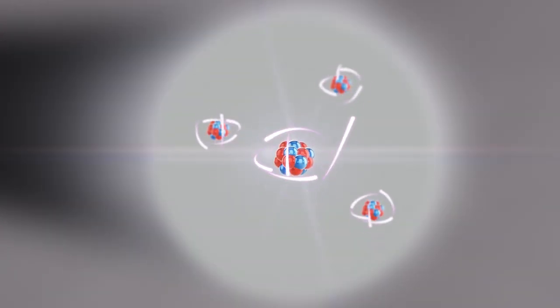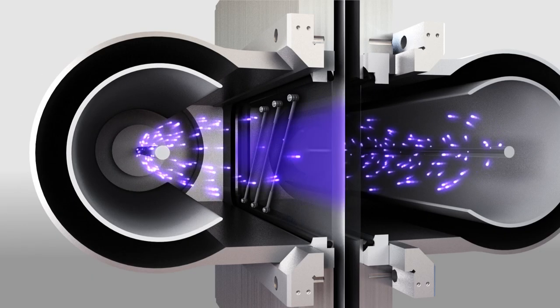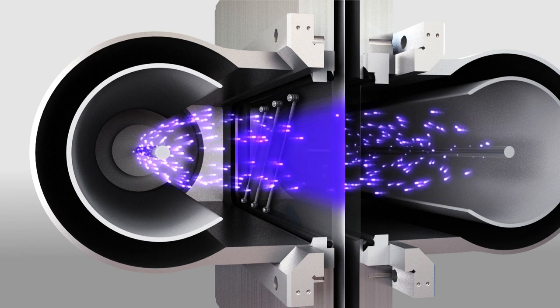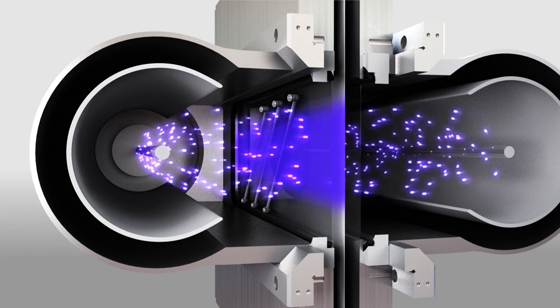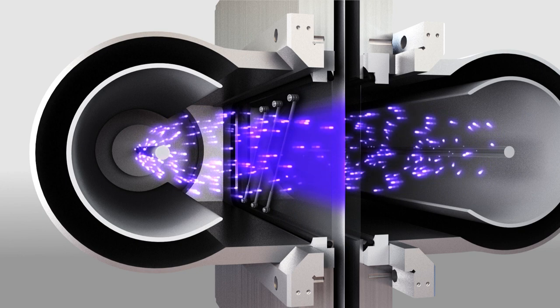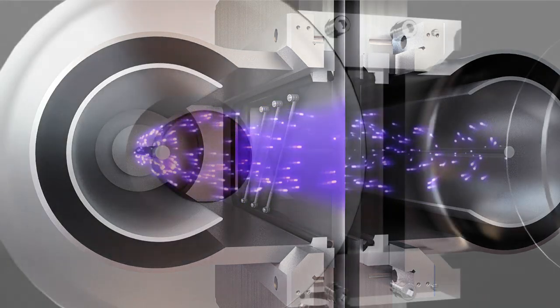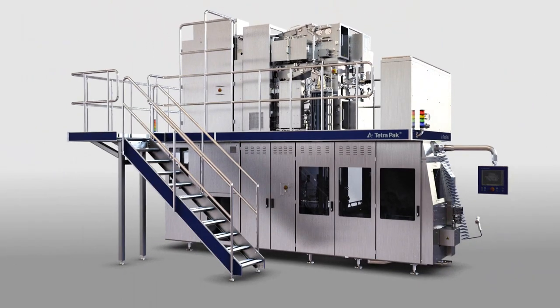E-beam lamps emit a controlled flow of electrons, which neutralize any microorganisms on the surface of the packaging material. At the same time, a monitoring system constantly checks the level of sterilization to ensure totally controlled results.